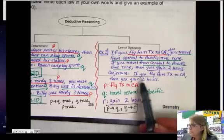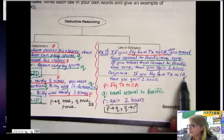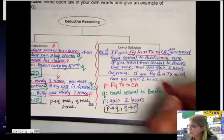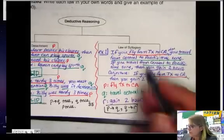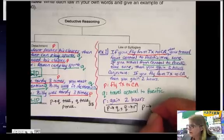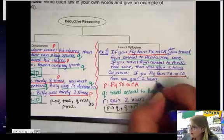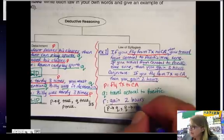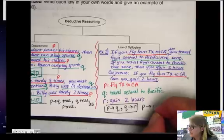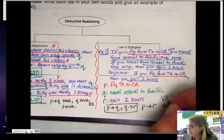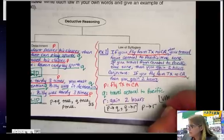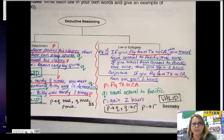So that means that our conjecture should start with P and move straight to R. So let's see if it does that. If you fly from Texas to California, so that's your P—so we have P arrow. Then you gain two hours, so we're back to our R here, gain two hours. And that is a valid use of the law of syllogism.